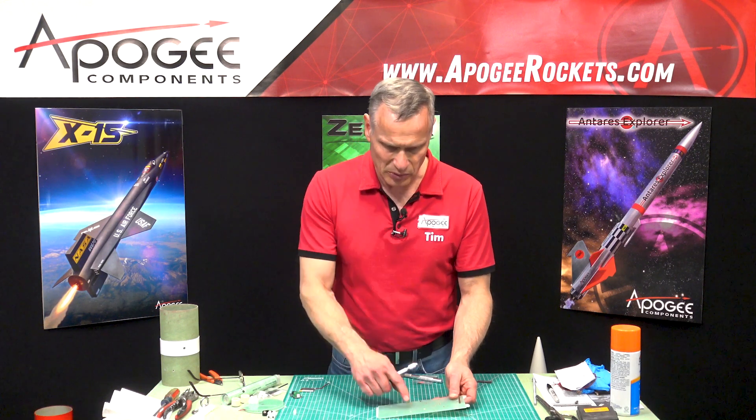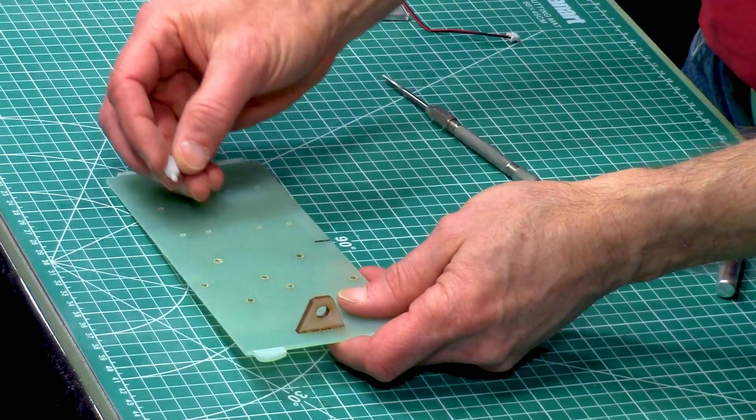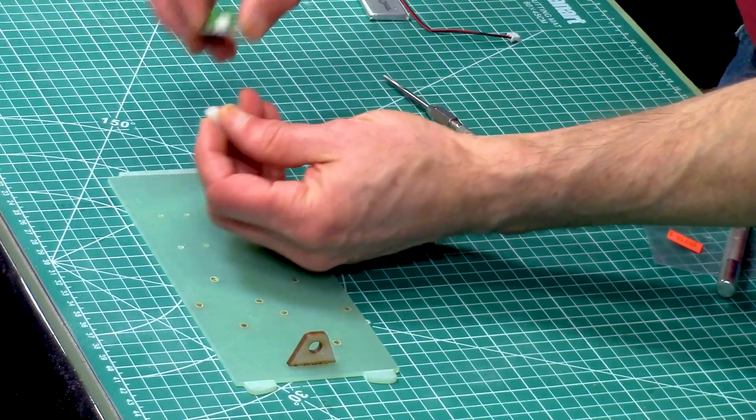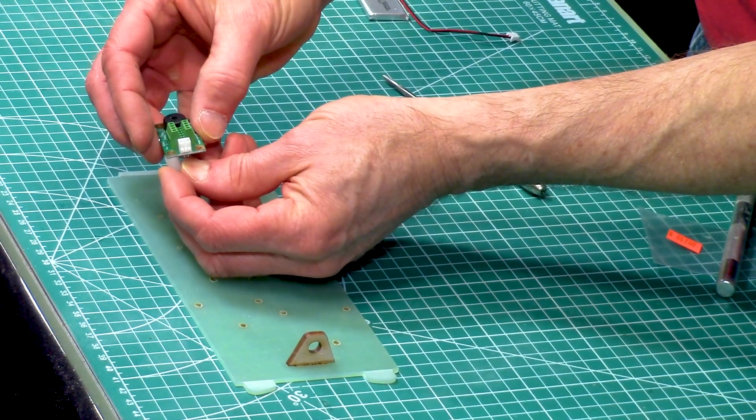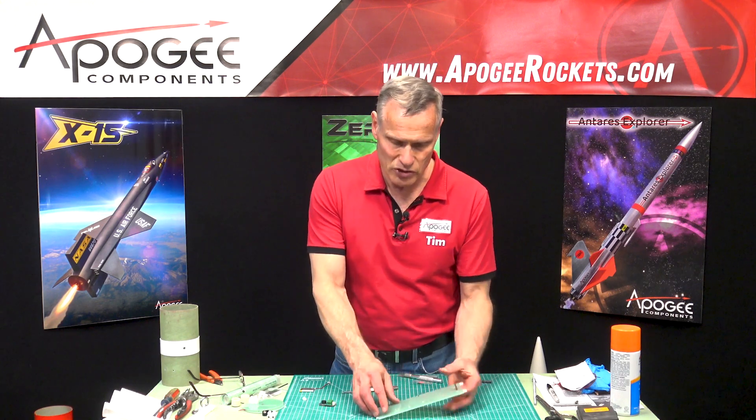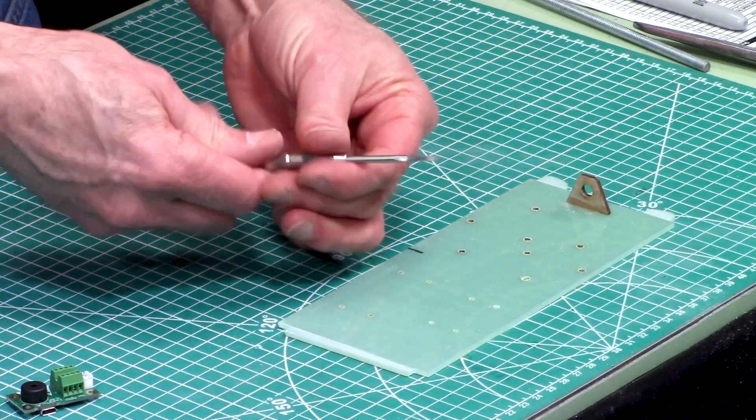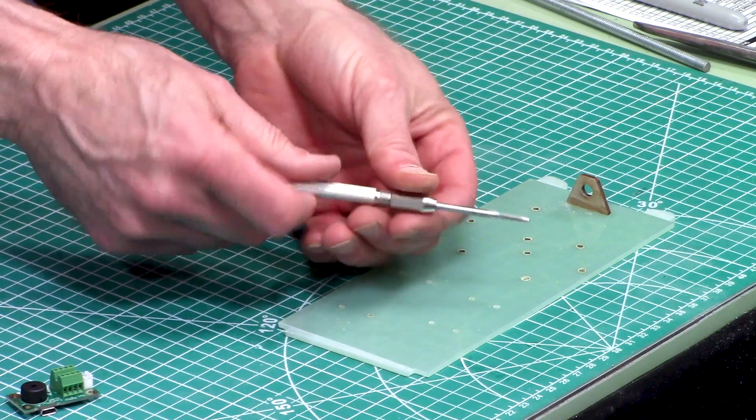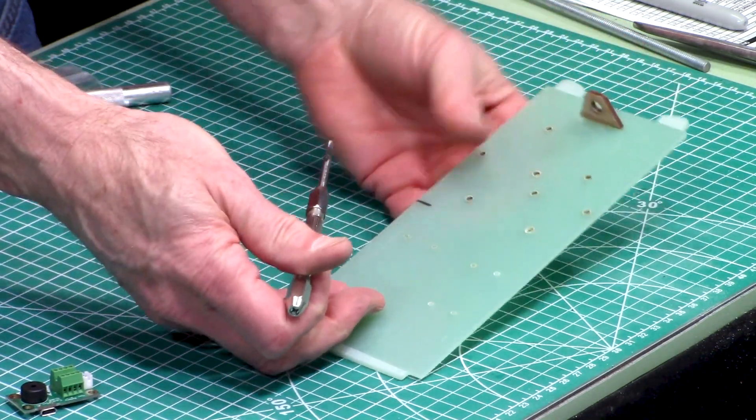Our next step is we're going to use these standoffs and the altimeter is going to be mounted on it like that through the little holes. We need to tap these holes and that's where this tap comes in. I've put it into a pin vise just to make it a little easier.